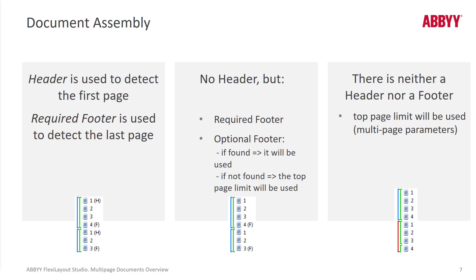This is an important capability for cases where you simply can't define a footer because there is no text string that can reliably indicate the last page of a document. Remember, the footer text string must be found only on the last page. Since that can be challenging, you can choose not to use footers. Similarly, you could delete the header group, and then the algorithm divides documents every time a footer string is found.